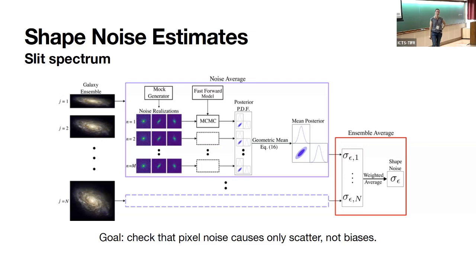We start out with a galaxy ensemble of different inclinations in a uniform distribution. For each inclination, we generate a large number of different noise realizations, each analyzed via MCMC to infer shear components from the galaxy image. We then obtain the mean posterior. At that point we check for noise biases, and if things look good, we combine different inclinations to get a population-level average of the expected noise of this measurement.